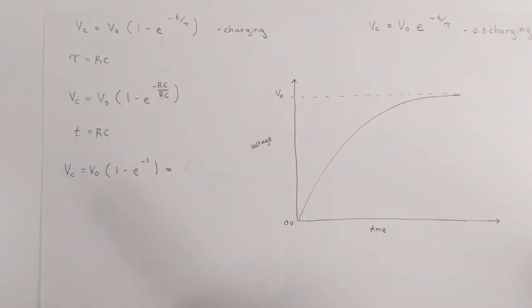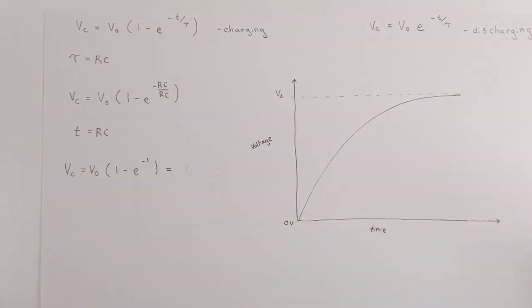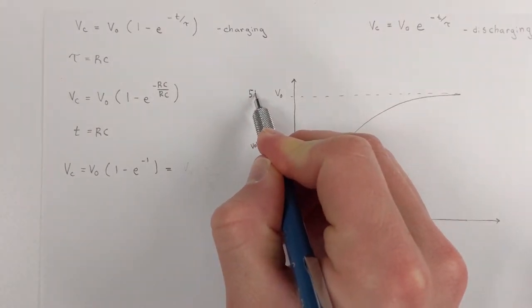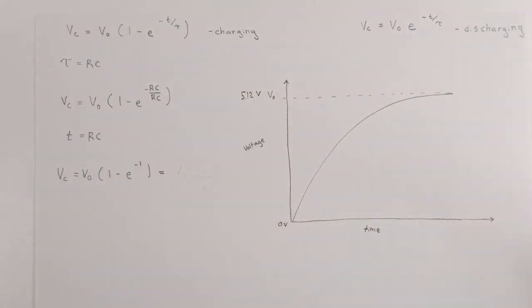V sub c is the voltage of the capacitor depending on where it is at time. So it is the voltage of the capacitor. V sub zero is the max voltage. The voltage that I'm getting from my function generator is 5.12 volts. So that's that voltage.